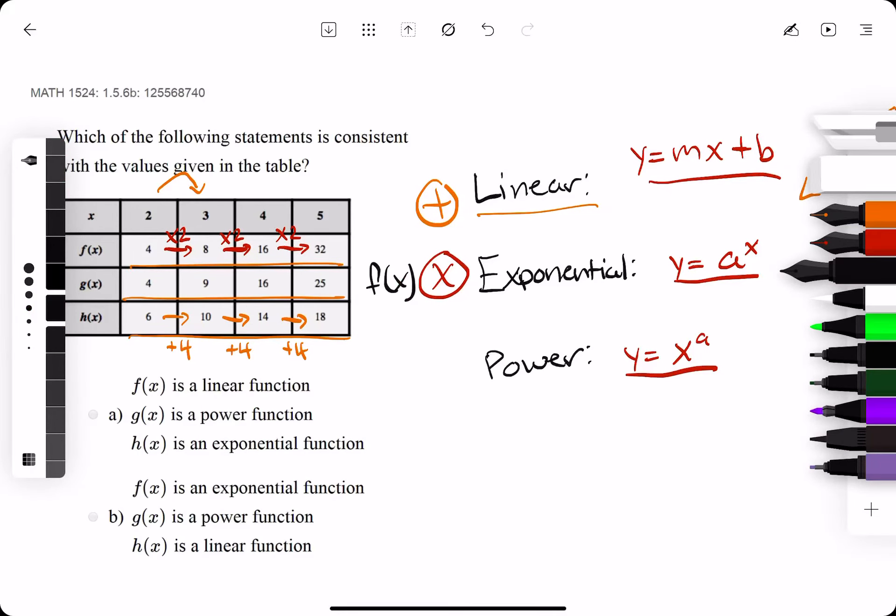Linear was our h function, which only leaves g to be the power function. So let's talk about why g is the power function.